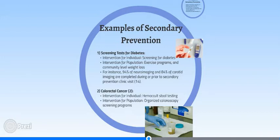Moreover, for the population, the intervention for controlling metabolic syndrome includes implementing exercise programs and community-level weight loss. Another example of secondary prevention for individuals includes fecal occult blood testing in order to detect colorectal cancer early. The treatment for colorectal cancer also includes organized colonoscopy screening programs as a population-level intervention.